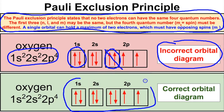To fix the incorrect diagram, here is the correct orbital diagram for oxygen. Oxygen has eight electrons: the first two are in the 1s orbital, the next two are in the 2s orbital, and then there are four electrons in the 2p. In the first p orbital, one electron spins one way and the other spins the opposite direction. Keep the Pauli Exclusion Principle in mind when drawing these orbital diagrams.